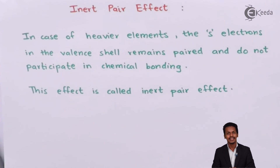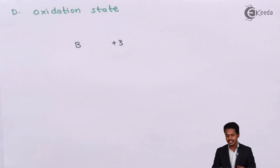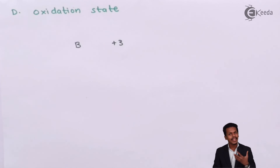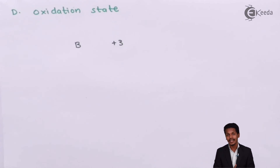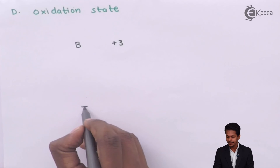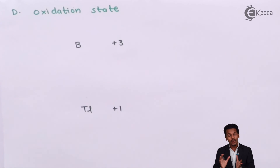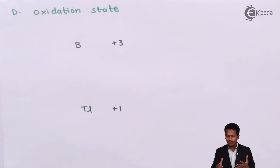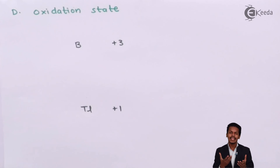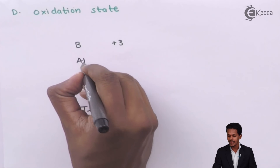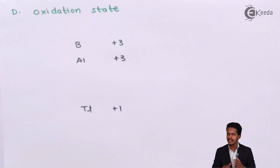Now let us talk about how oxidation states change in group 13 elements. Boron will clearly exhibit a +3 oxidation state. As we move from top to bottom — from Boron to Thallium — the stability of the +3 oxidation state goes on decreasing. Thallium is the one which will exhibit only a +1 oxidation state as its stable form. Boron forms a stable +3 oxidation state. For the elements between Boron and Thallium — Aluminium, Gallium, and Indium — they also exhibit +3, and Aluminium is very stable in the +3 state, which is why AlCl₃ is a stable compound.